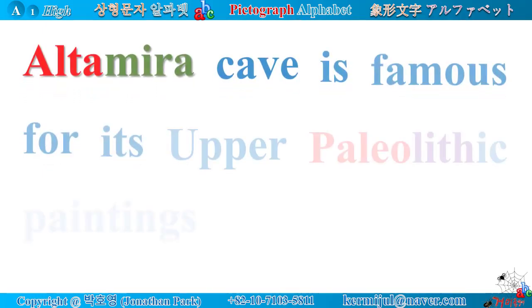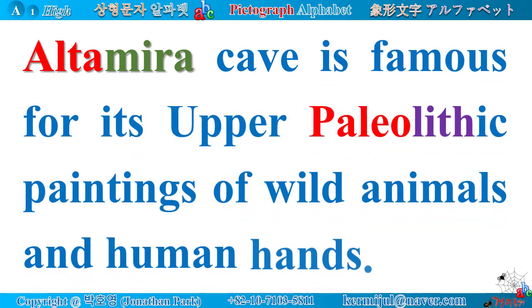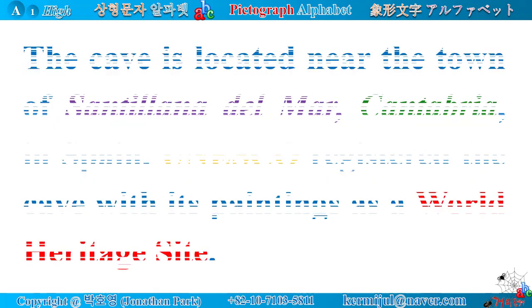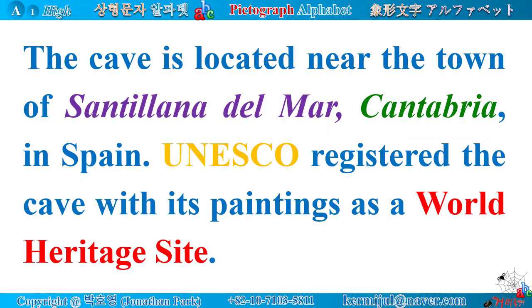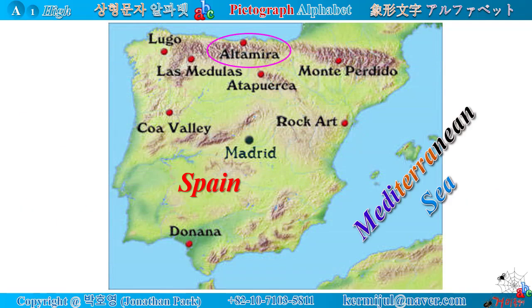Altamira cave is famous for its Upper Paleolithic paintings of wild animals and human hands. The cave is located near the town of Santillana del Mar, Cantabria, in Spain. UNESCO registered the cave and its paintings as a World Heritage Site. Look at the top of the map — you can see Altamira, and in front of it is the Atlantic Ocean. Is it possible to look over the Atlantic Ocean from Altamira cave?